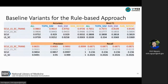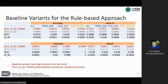This slide shows the results of the comparisons between the four variants of the rule-based approaches. All baseline variants have high precision and low recall. Among the variants, the transitive rule performs the best, and we will compare this variant with the supervised learning approach.